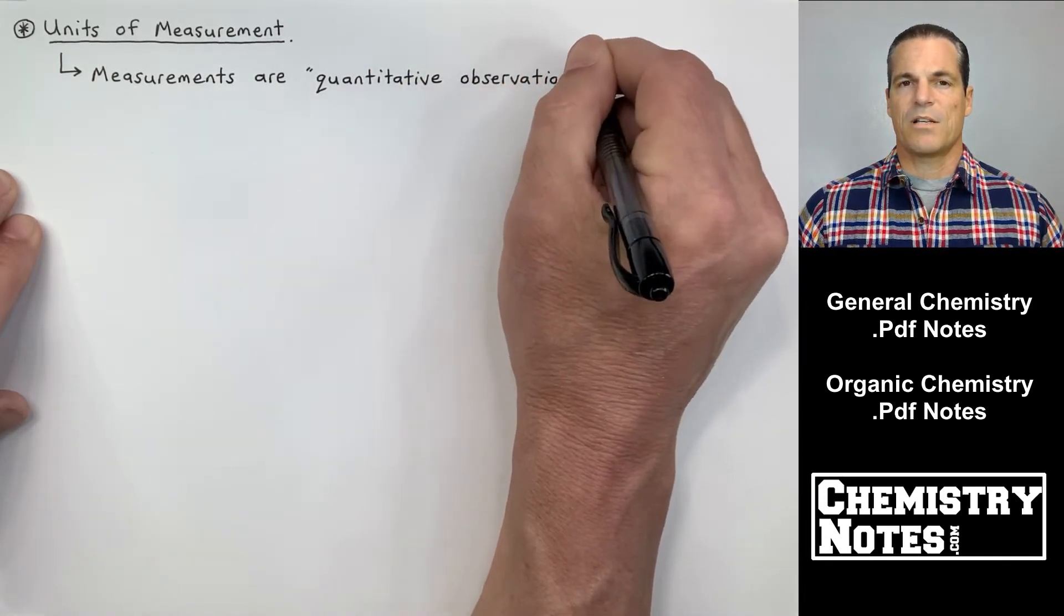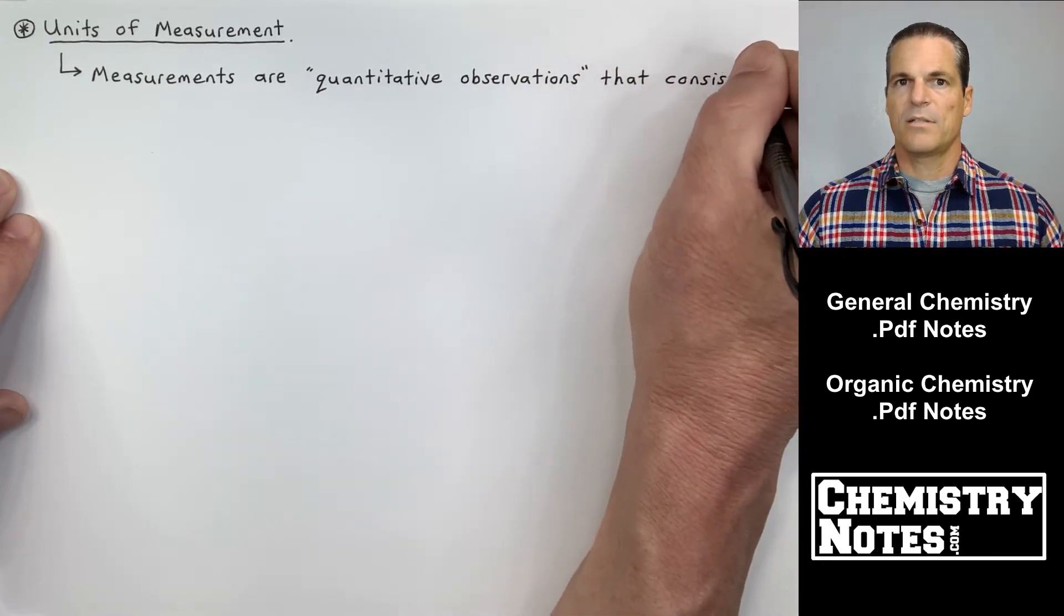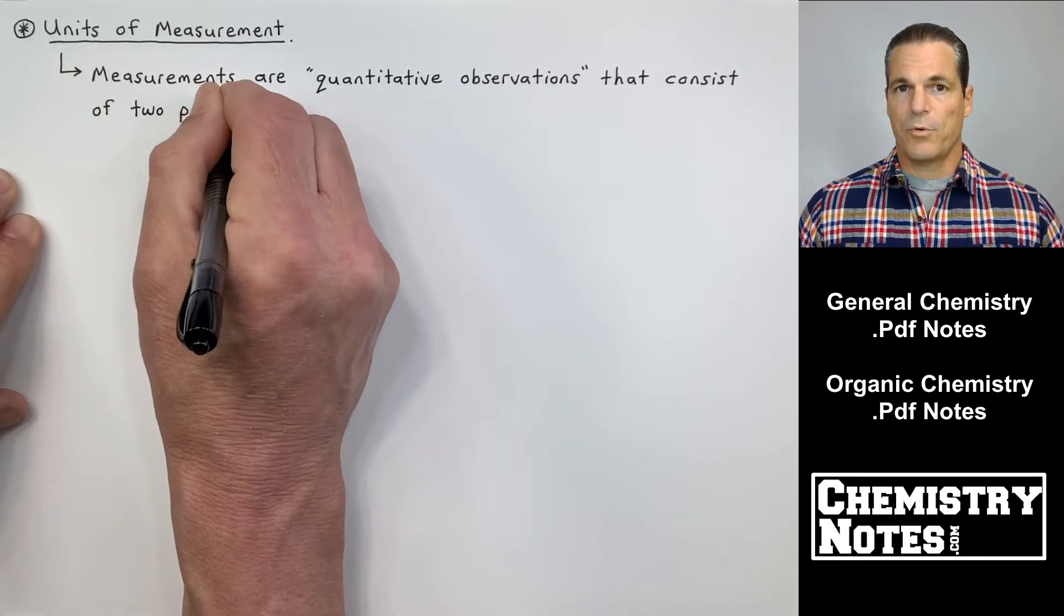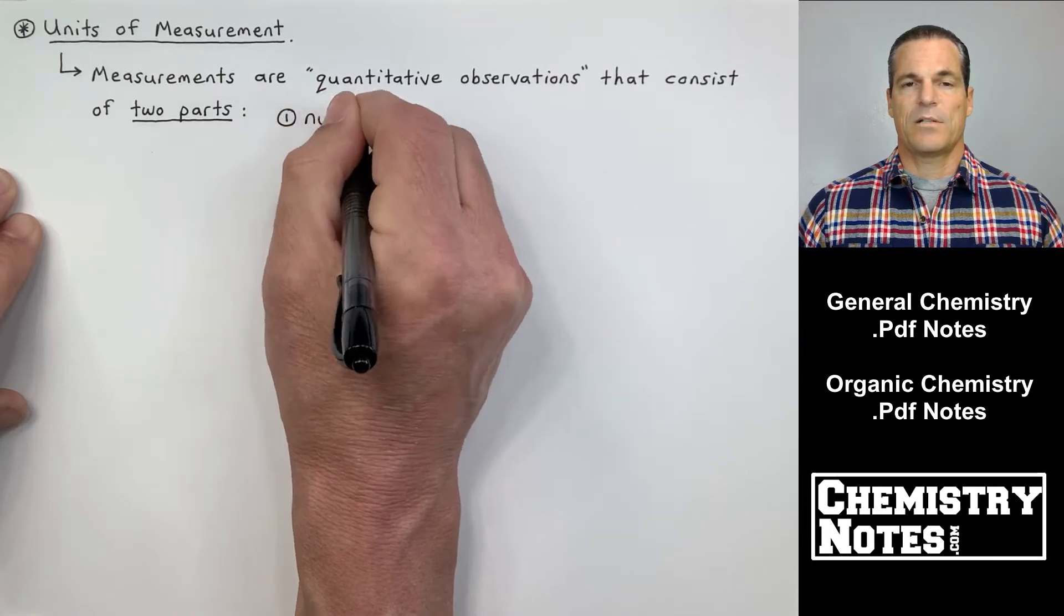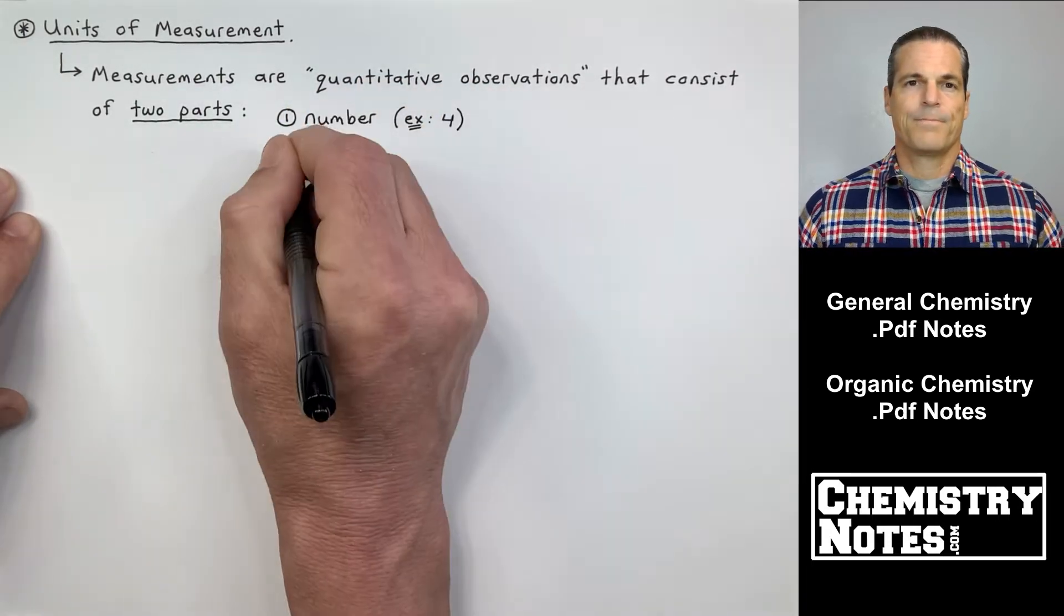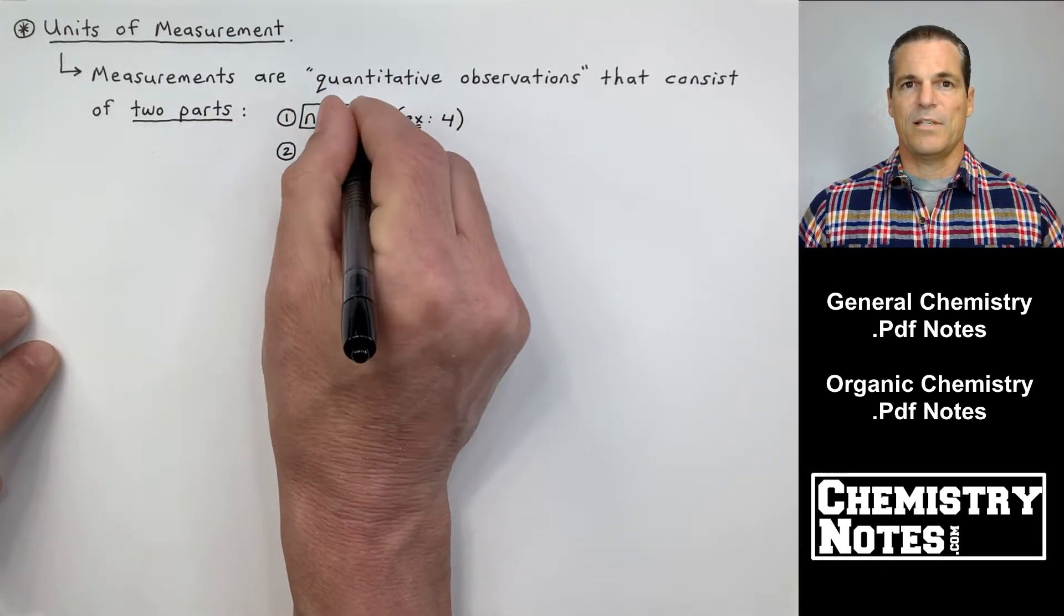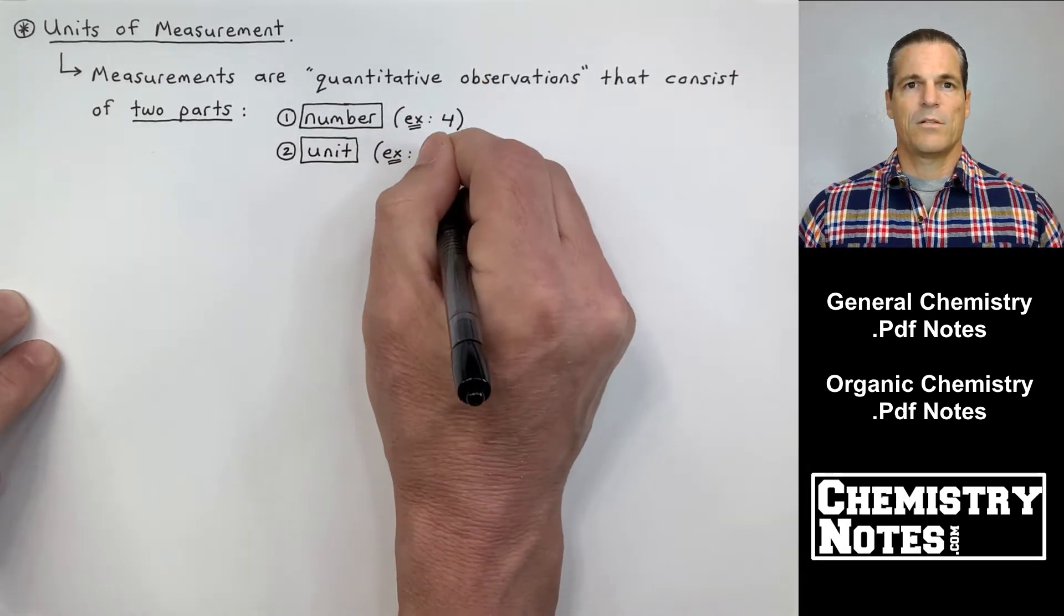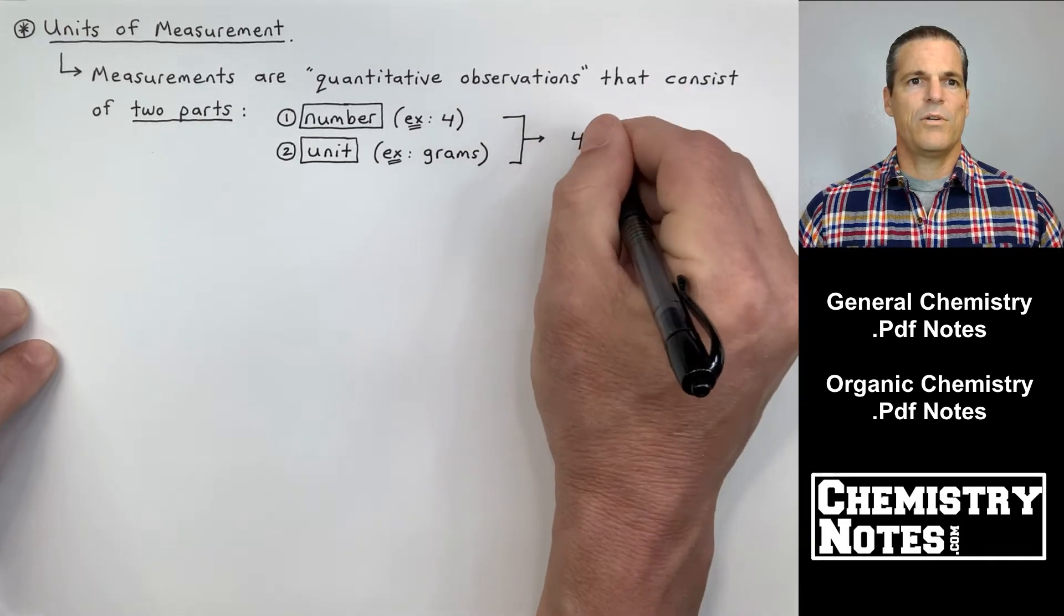This video we're going to start talking about units of measurement. So I'm going to introduce to you something called SI base units or SI fundamental units, also SI derived units, some of the prefixes that we use in chemistry, and then we're going to start to talk about uncertainty in measurement. I might also throw in a little bit on mass versus weight. So we got a pretty busy video here. This is section one, video number two. So let's get started. Top of page one of today's notes, units of measurement.